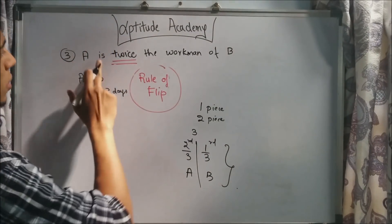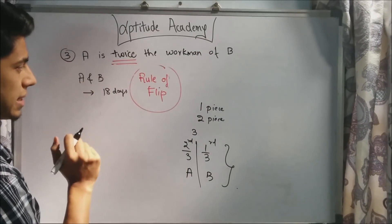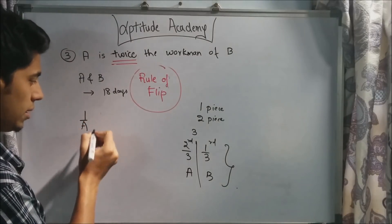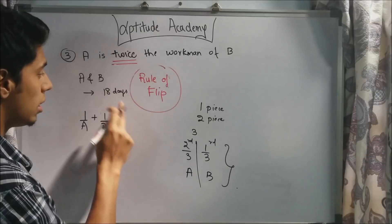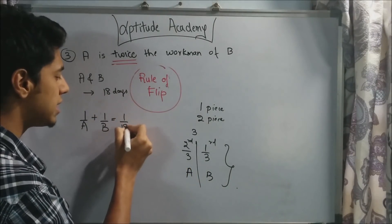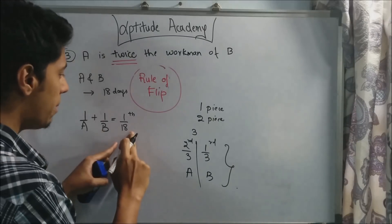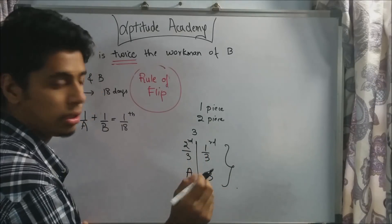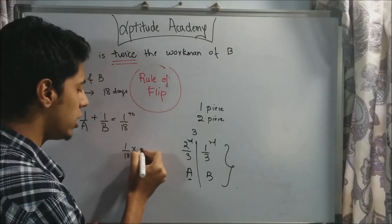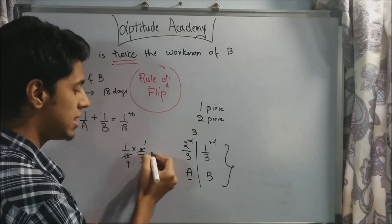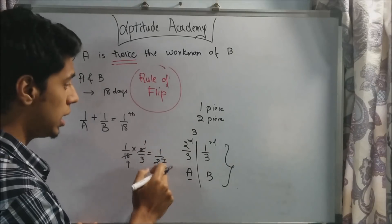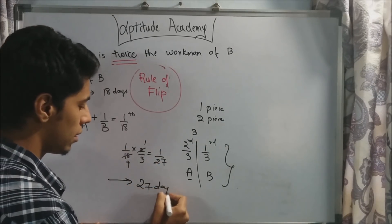So A is doing two thirds of the work and B is doing one third. A and B complete the work in eighteen days. By the rule of flip, every day one by eighteenth of the work is done. We know A does two thirds of that total daily work, so A's daily contribution is one by eighteen multiplied by two by three, which equals two by fifty-four, or one by twenty-seven. By the rule of flip, if every day A does one by twenty-seventh of the work, then A will finish the work alone in twenty-seven days. That is your answer.